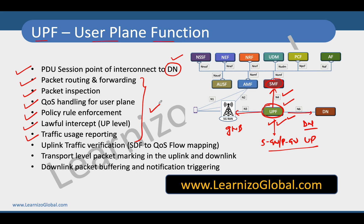One important thing to note is that even though UPF performs all these functions, these decisions are not taken by the UPF itself. UPF is a dumb device which does everything based on instructions given by the SMF. All rules for buffering, forwarding, and usage reporting are passed on to UPF from the SMF depending on the policies fetched by SMF. Typically, SMF first fetches the policy from PCF, creates some PDRs based on that, and forwards those rules to the UPF.